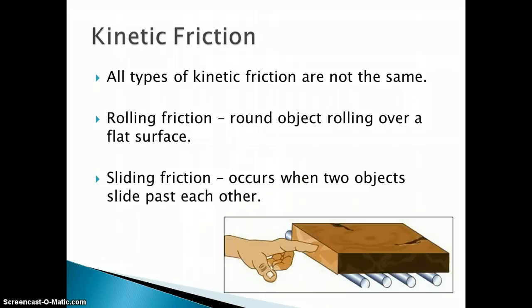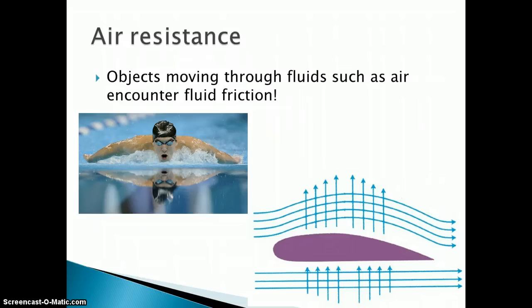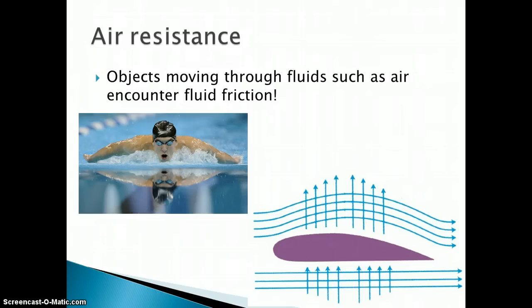Kinetic friction — there are lots of different types of friction when moving from one thing to another. If we roll an object over a flat surface, we have rolling friction. Rolling friction is usually less than sliding friction, which occurs when two objects slide past each other. Don't forget about air. Air actually has a force — it's fluid friction. Air is a fluid, by the way. Air resistance — any time an object moves through any type of fluid, whether it's water or air, we're going to encounter friction as well.